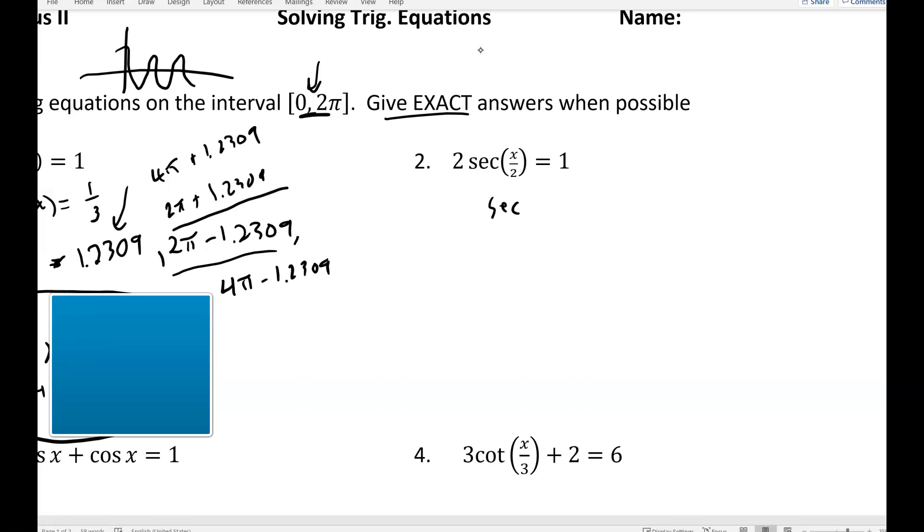We'd first try to get secant by itself. So that would be secant of x over 2 equals 1 half. Now before we get any further, let's stop and think about this for a second. I have a number on the inside. If we remember that in terms of graphing, dividing by 2 on the inside would stretch the period out. So this is going to have fewer answers than normal in that 0 to 2 pi range. And also notice the secant. We don't know what secant is as far as there's not a secant button on the calculator. So when I see something involving secant, I rewrite it as cosine of x over 2. But I'd have to flip this thing so it's 2 over 1, because if I flip secant to get cosine, I've got to flip 1 half to get 2. So then we end up with cosine of x over 2 equals 2.